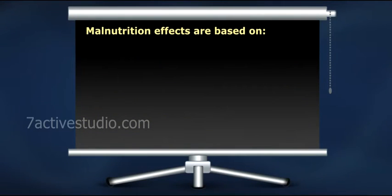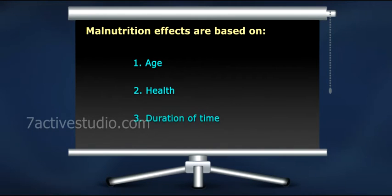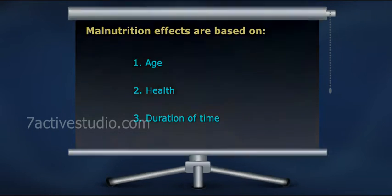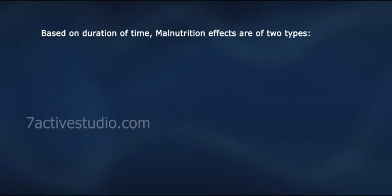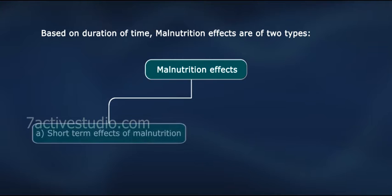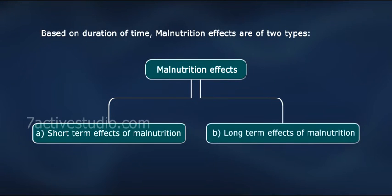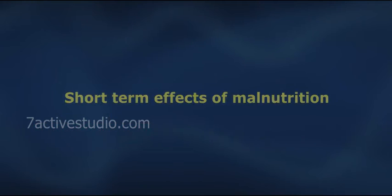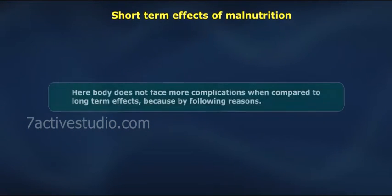Malnutrition effects are based on: 1. Age, 2. Health, and 3. Duration of time. Based on duration of time, malnutrition effects are of two types: A. Short-term effects of malnutrition, and B. Long-term effects of malnutrition.